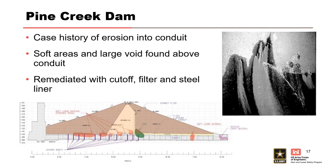Pine Creek Dam is a case history of erosion into the conduit. Soft areas with low blow counts and a large void were found above the conduit — the figure shows soft zones in red and the large void in green. The photo on the right shows leakage occurring into the conduit. The project was remediated with a cutoff wall above the conduit, a drilled-in chimney filter, a downstream conduit perimeter filter, and a new steel conduit liner.